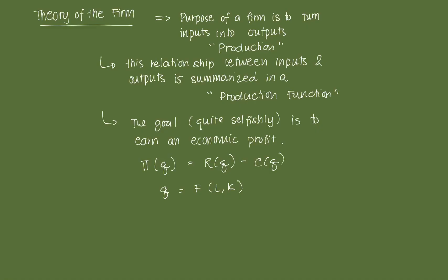Before we reach the theory of the firm, we typically understand consumer behavior. In the theory of the consumer, the goal of a consumer is to maximize their happiness. Mathematically, we denote their happiness as the utility function, subject to a budget that they would be endowed with or receive as wages or some other source of income.